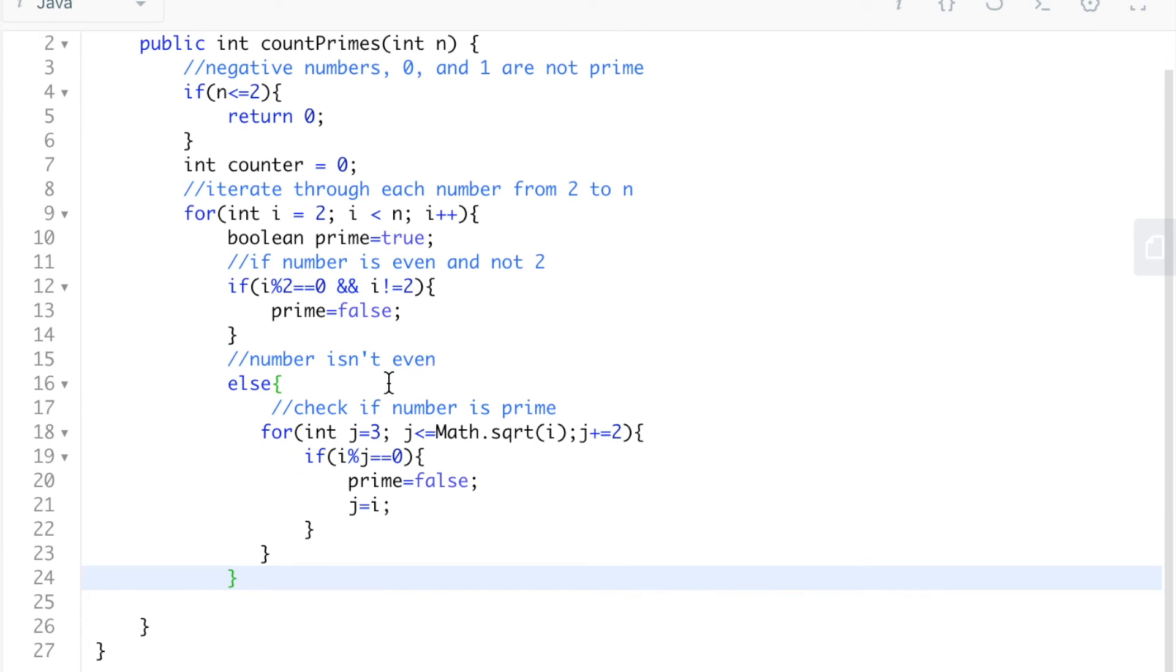And in the case that the number isn't even, we're going to check if it is prime. We're going to do this by seeing if it is divisible by any odd factor all the way from 3 up to the square root of that number.